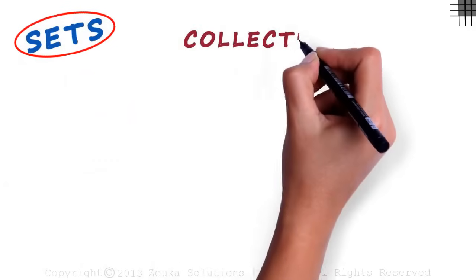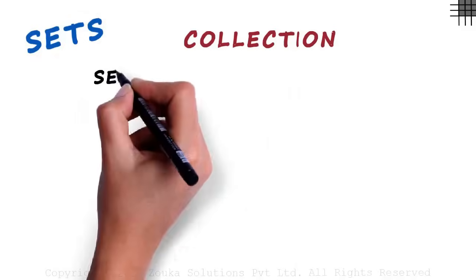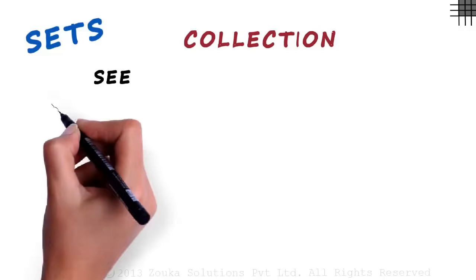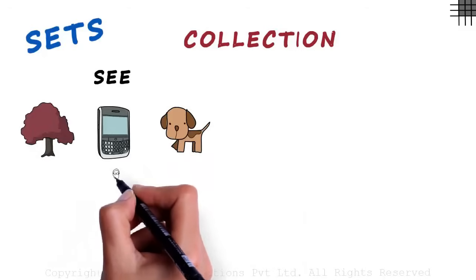A set is basically a collection of things. Think about it. What if you were asked to make a list of all the things you can see? Of course, you can't write all the things, but some of the things you would mention are a tree, a cell phone, a puppy, people, and so on.